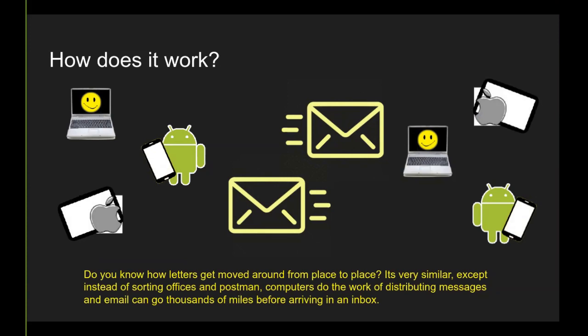When a letter gets put in the letterbox — say, just to the other side of London — it doesn't travel far. It goes in the letterbox, it goes to a sorting office, and then to another postman who delivers it. If it goes across the country, you're going through a lot of sorting offices — maybe trains, maybe planes, maybe vans, all sorts of different ways, lots of in-between points before it gets to that postman putting it through your letterbox.